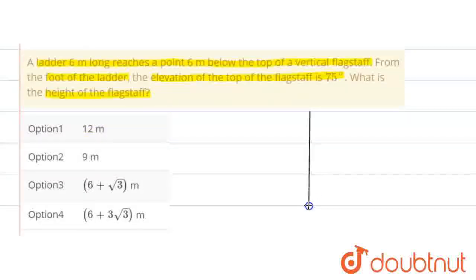Basically, here is a flagstaff. This is the ground. This is a ladder 6 meter long. The ladder is something like this. From the top of the flagstaff, the flagstaff is 6 meter below here. The length of this ladder is 6 meter. The foot of the ladder is here.